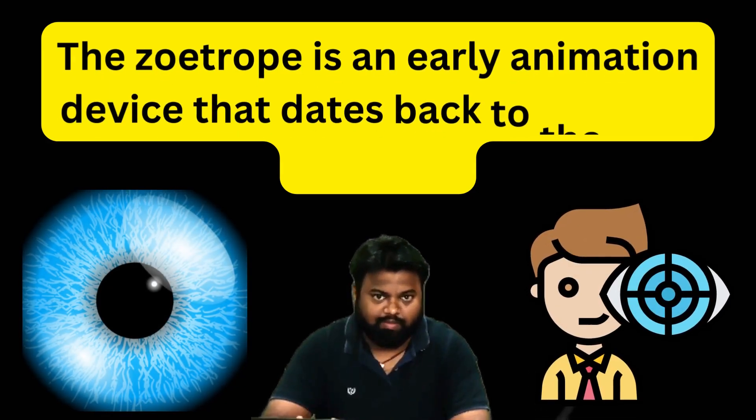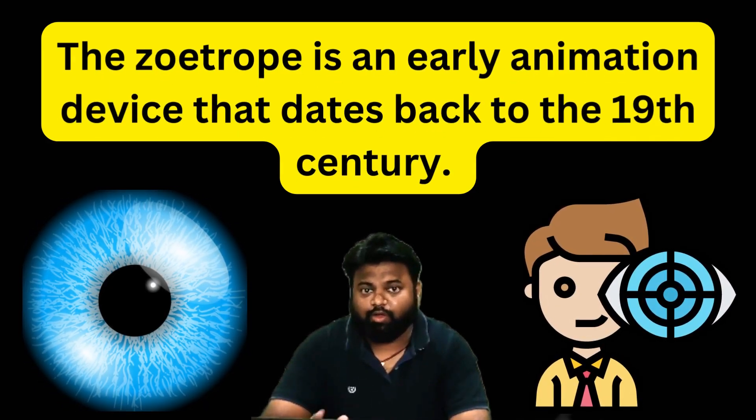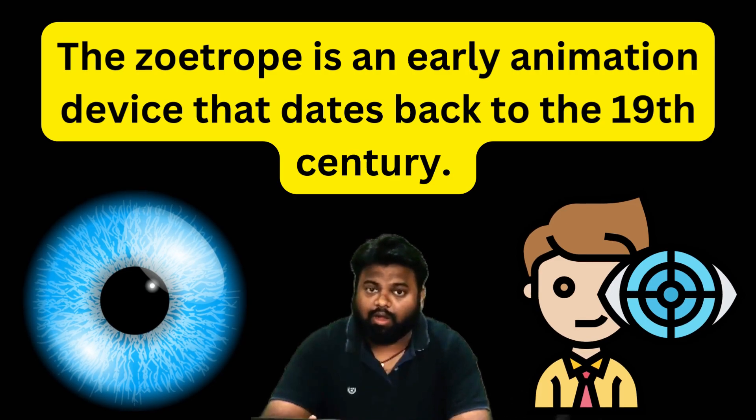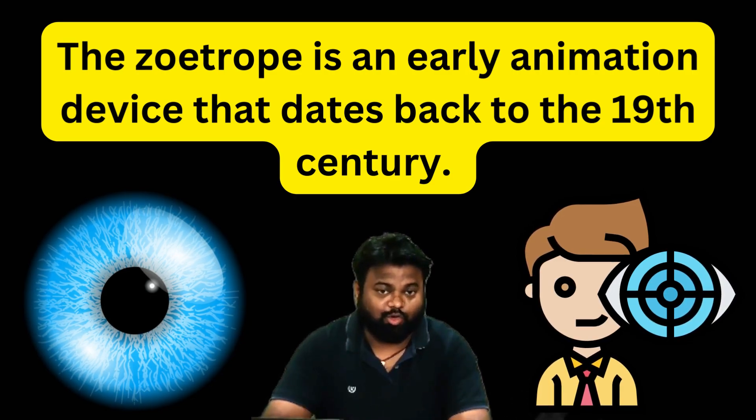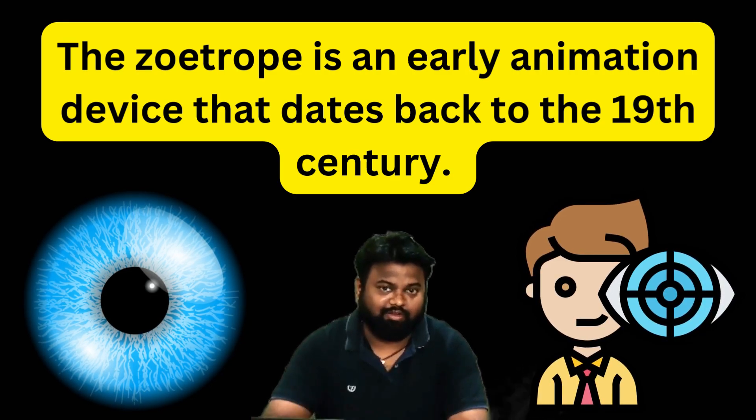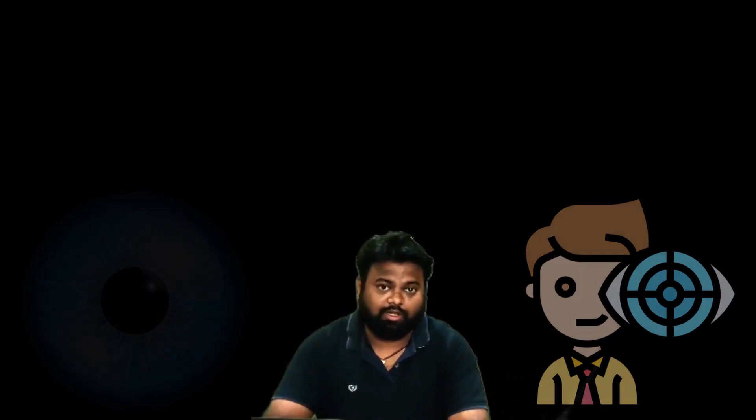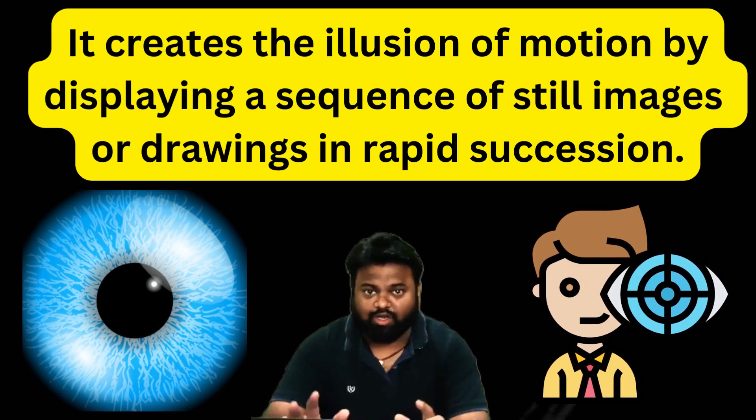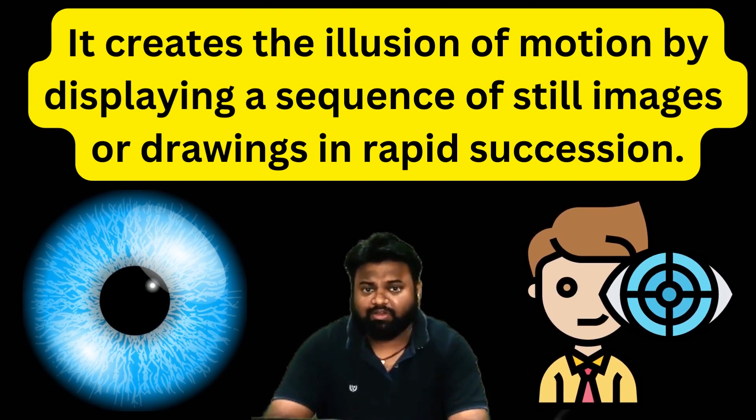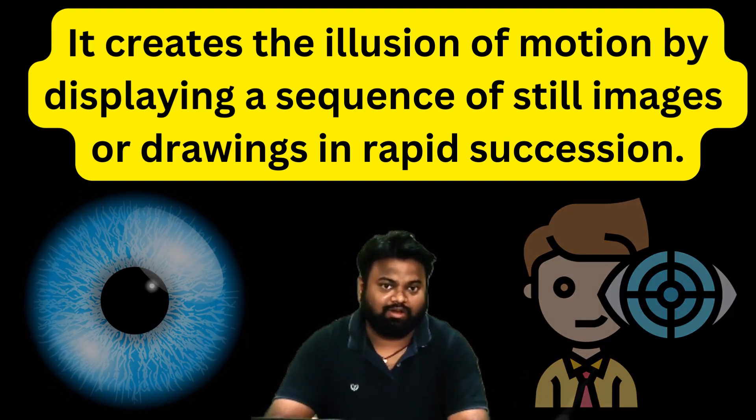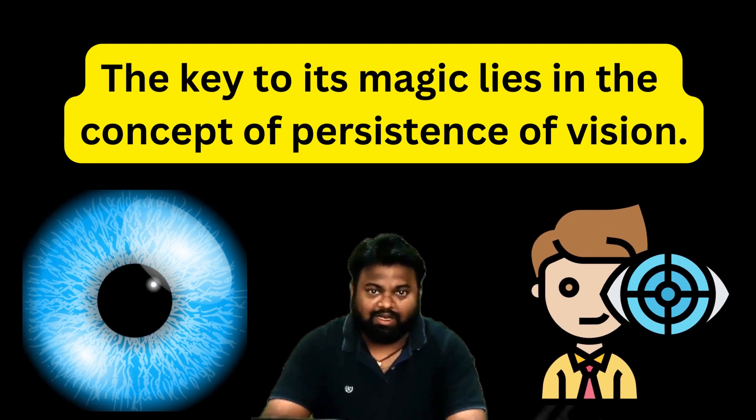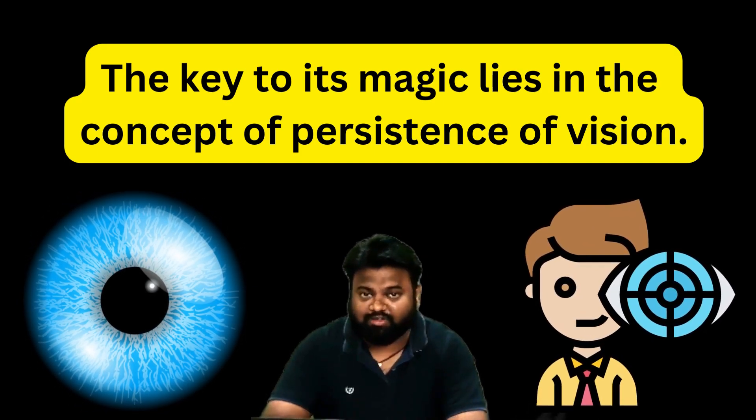So why don't we get ready for a journey into the world of animation. Well friends, before conducting the experiment, I would like to provide you a little bit of information about the zoetrope. The zoetrope is an early animation device dating back to the 19th century. This device creates an illusion of motion by displaying images or drawings in rapid succession. The key to its magic lies in the concept of persistence of vision.